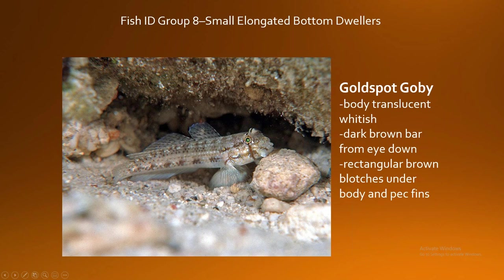The gold spot goby lives in small, loose groups in sandy rubble right around the reef — their coloration is an adaptation to blend into their surroundings. Their main distinguishing feature is a dark brown bar that goes through their eye, and they also have rectangular brownish patches that go from the anterior of their body all the way back to their tail. With the gold spot goby, you've got the dark brown bar, these rectangular blotches, and of course its gold spot right above its fin.